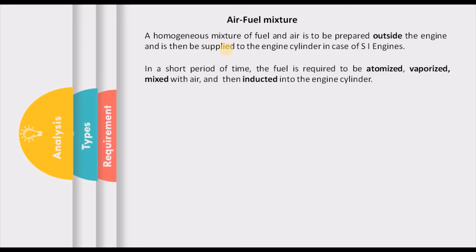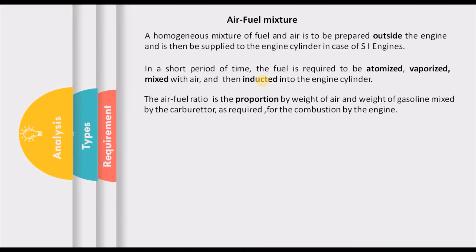That is where the homogeneous nature of the mixture becomes important in SI engines. We also know that SI engines are preferably of the high speed category, and in this small period of time, we have to ensure that the fuel supplied to the mixture has to be atomized, vaporized, and mixed with air properly to form an air fuel mixture of required quality. This mixture then has to be introduced into the combustion chamber. The proportion by weight of air to fuel mixed by the carburetor for combustion in SI engines is what we call the air fuel ratio.